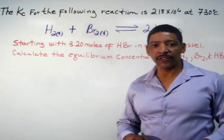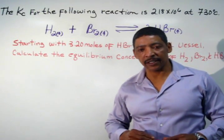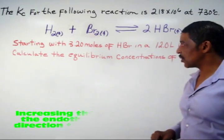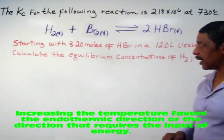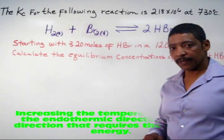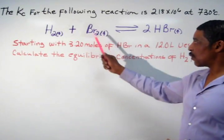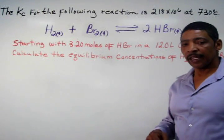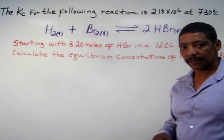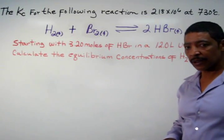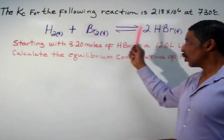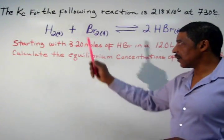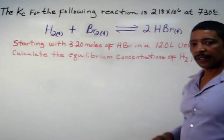How would increasing the temperature affect this reaction at equilibrium? Increasing the temperature favors the direction that is endothermic. For example, if the forward reaction is endothermic, heat is being consumed. Therefore, by increasing the temperature, the rate of the forward reaction will increase, causing the reaction to shift to the right.